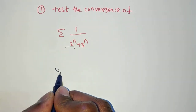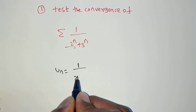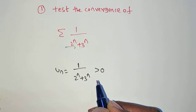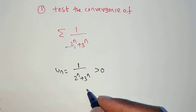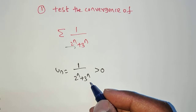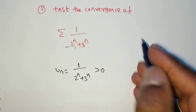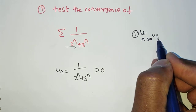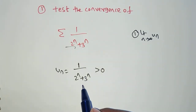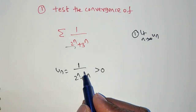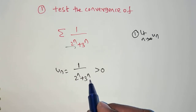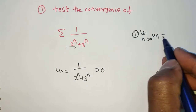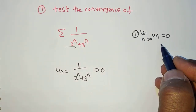We write uₙ = 1 / (2ⁿ + 3ⁿ), which is greater than 0 — it is a series of positive terms. Now, to test convergence, we first apply the limit: limit as n tends to infinity of uₙ. As n tends to infinity, the denominator becomes infinite, so 1 divided by infinity becomes 0. The limit is 0, so it is convergent by the necessary condition.